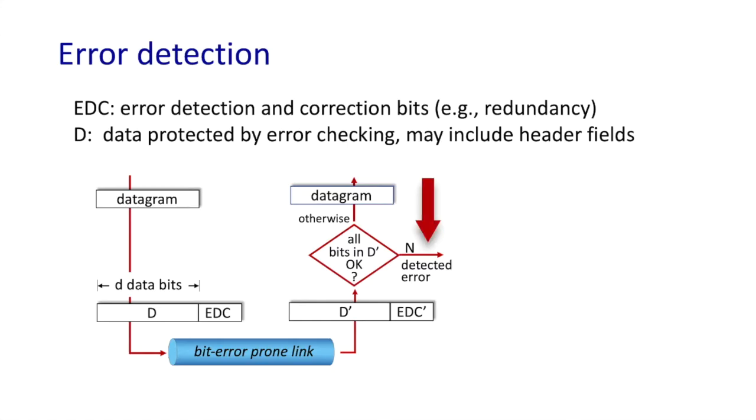Otherwise the frame will be dropped, or perhaps a retransmission procedure will be initiated with ACKs and NACKs, just as we studied in chapter 3. What we want to focus on now is how this check is done. To understand that, we'll need to understand how these EDC bits are computed here on the sender side.